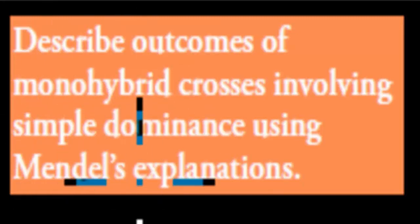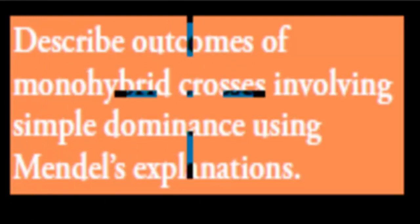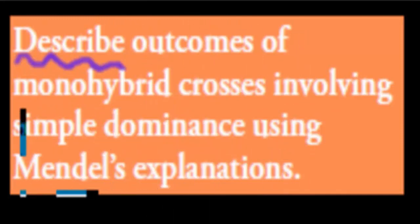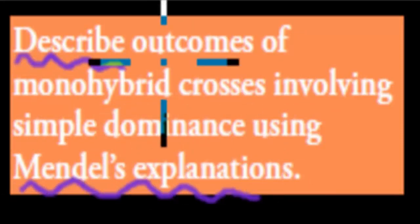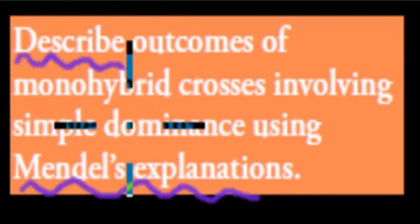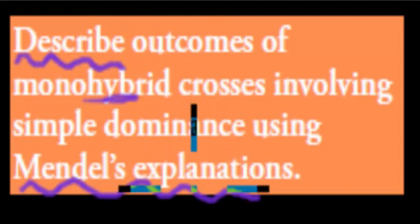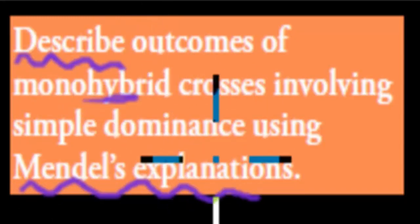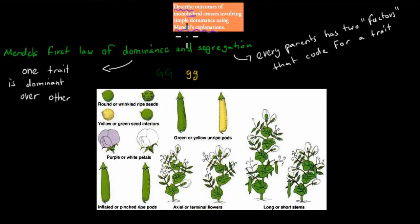In the last video we talked about Gregor Mendel's experiment. What we're actually going to do in this video is describe his results and explain his results. The dot point says: describe outcomes of monohybrid crossing involving simple dominance using Mendel's explanations. We have to describe the results of monohybrid crossing, then use Mendel's explanation to account for those results.